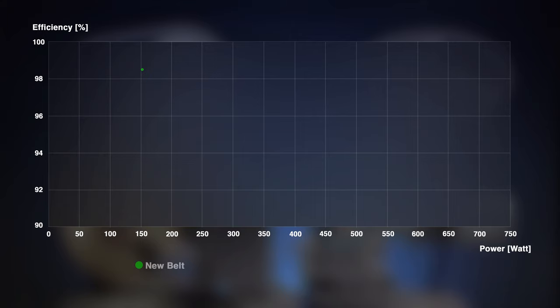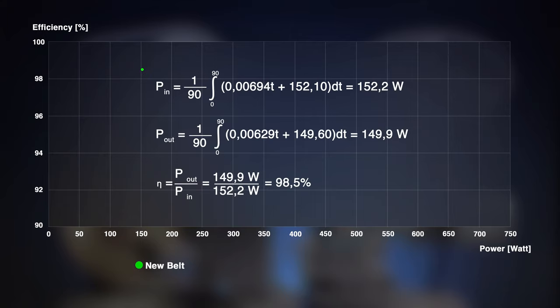To do so, we determine the midpoint of the functions from the input and the output power and put the results into the formula we know from the last video. This way, we will receive the first of many data points. 98.5% of efficiency at 150 watts in this case.